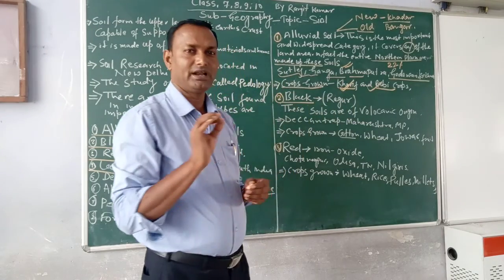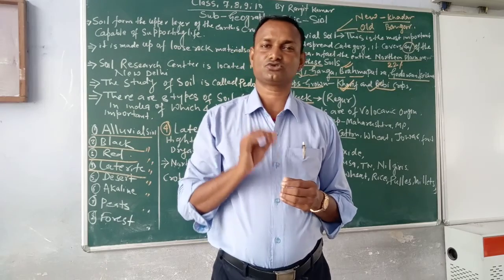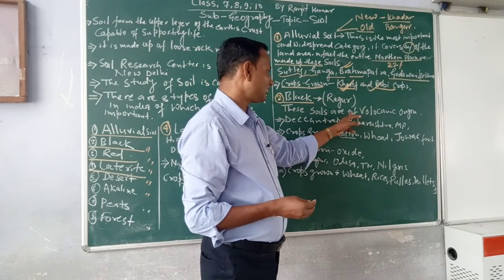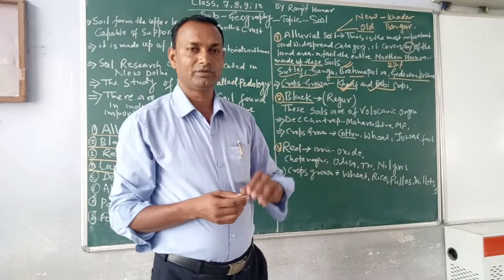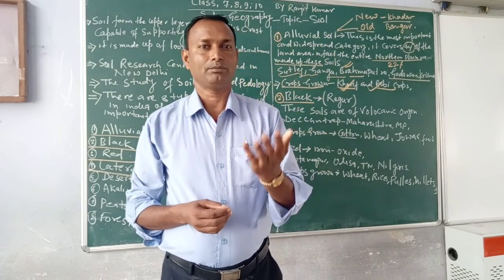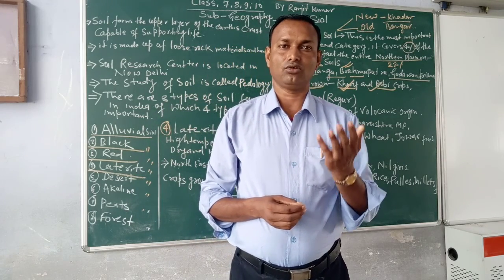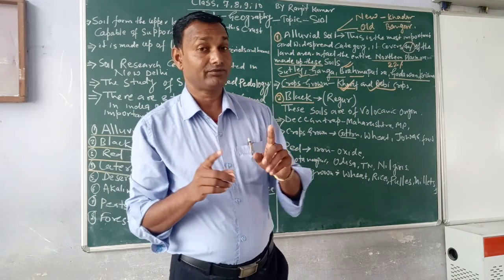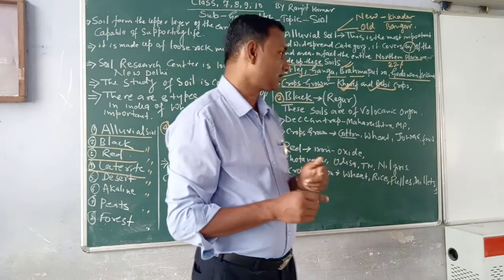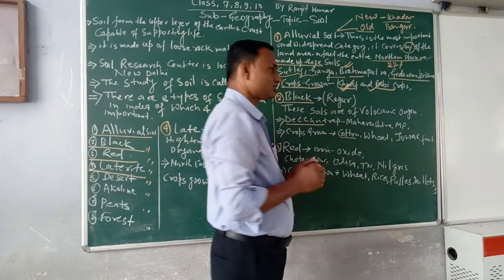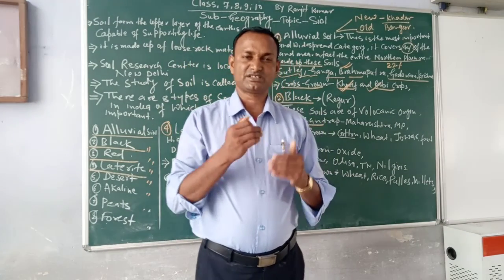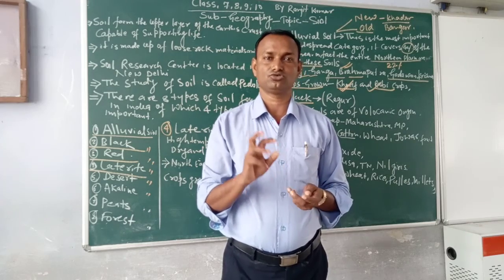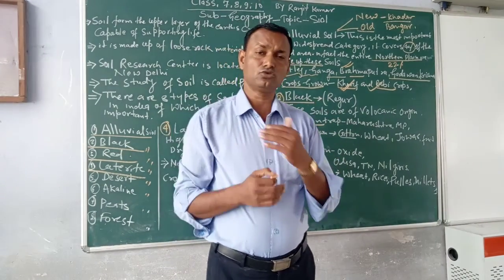Second is Black soil. Black soil is called Regur soil. In Hindi, Black soil is also called Kaali Mitti. Black soil is formed from volcanic origin. It is believed that Black soil was formed from the eruption of volcanoes. India's Deccan Trap was formed by volcanic activity. The Deccan Trap, located in Maharashtra, is made from basalt rock. When basalt rock undergoes chemical and physical weathering, it converts into Black soil, also called Regur soil.